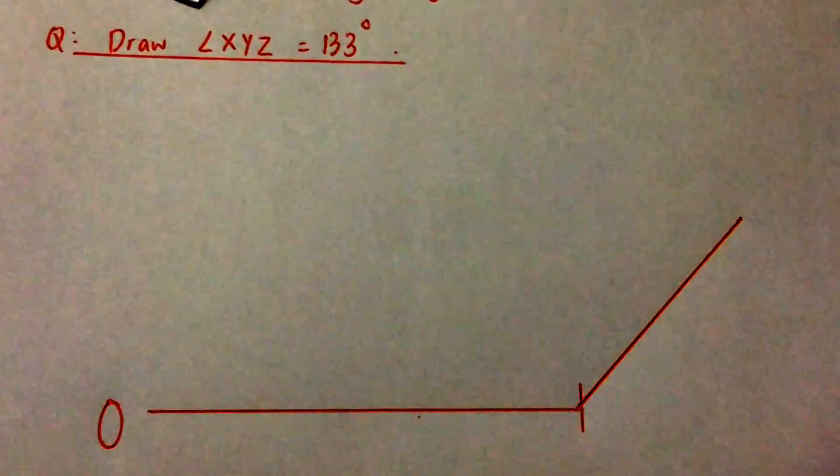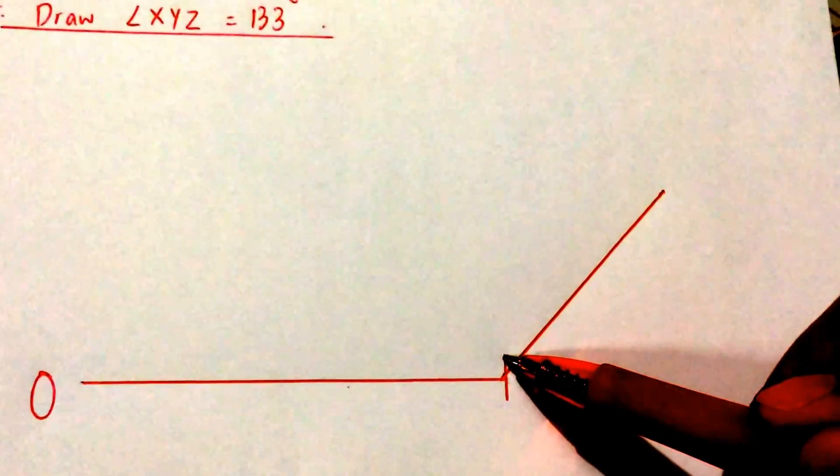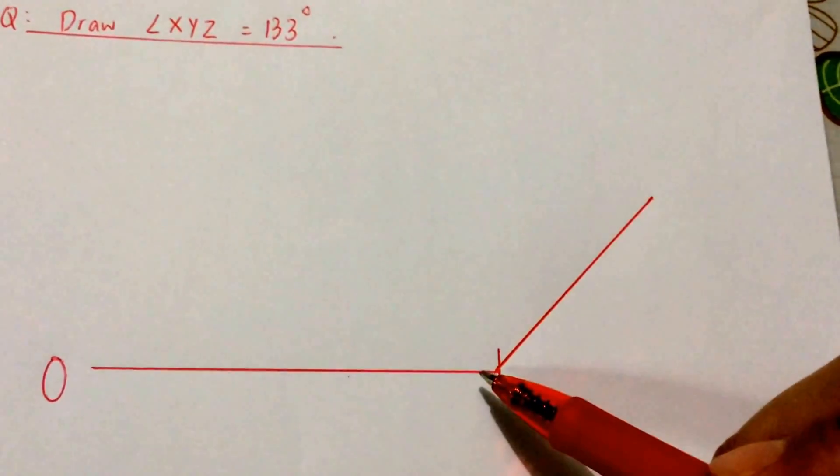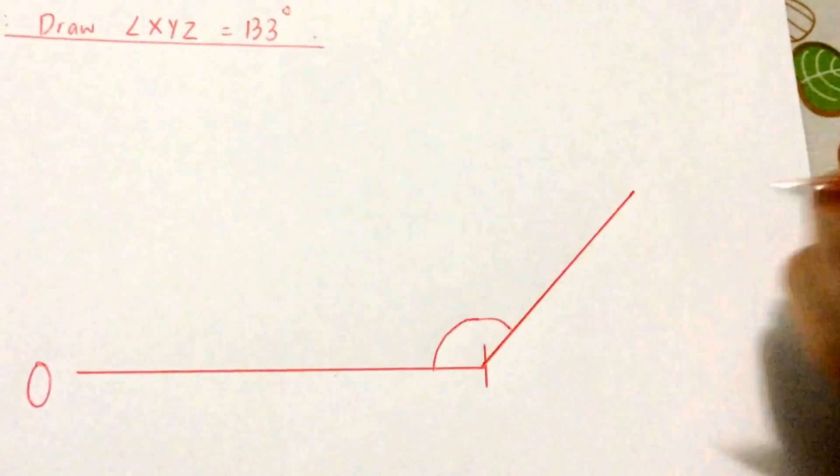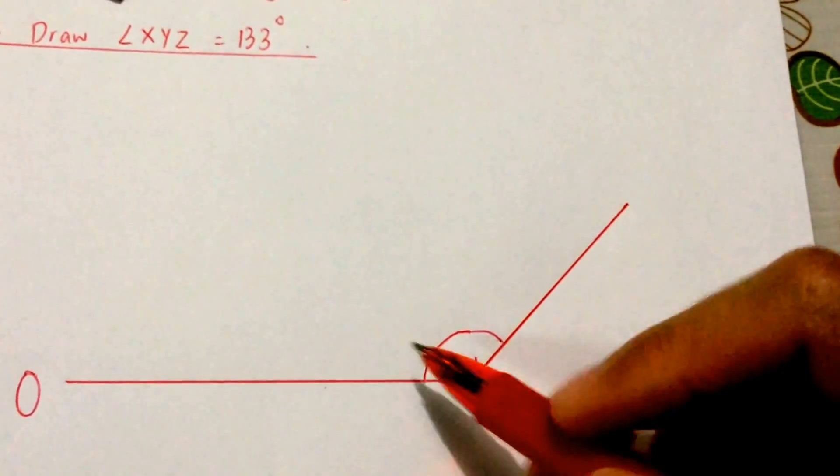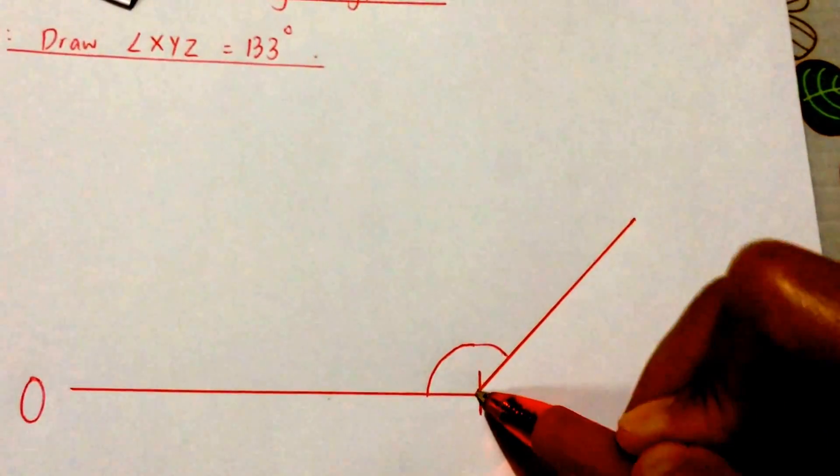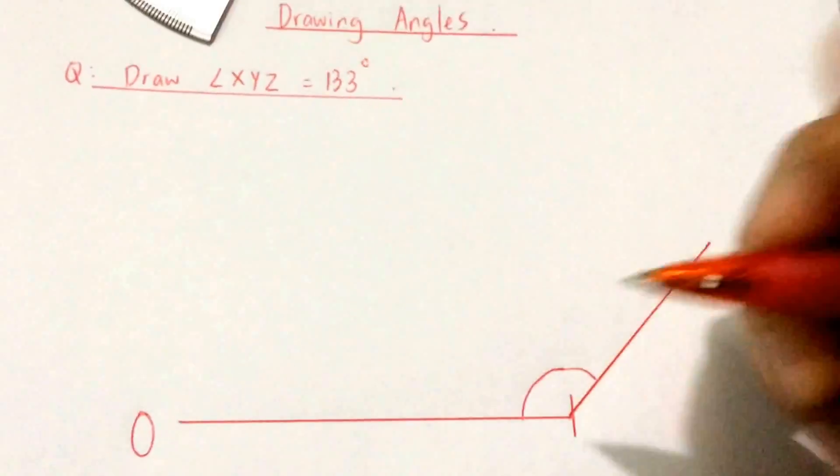Some people make the mistake of drawing the line to the top of this point. That's wrong. You are supposed to draw the line to touch this line zero here and your angle will be here, because an angle is when two lines meet at a point. So your angle will be here.